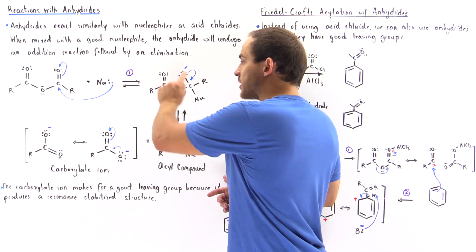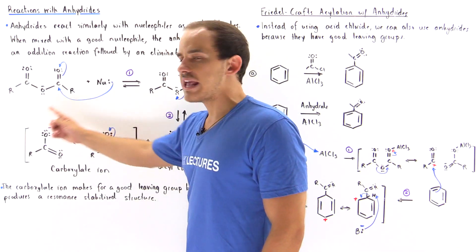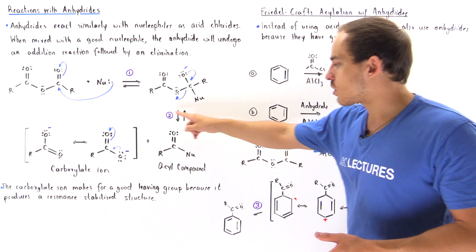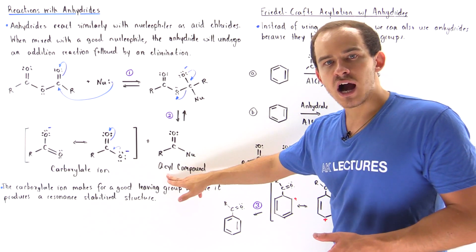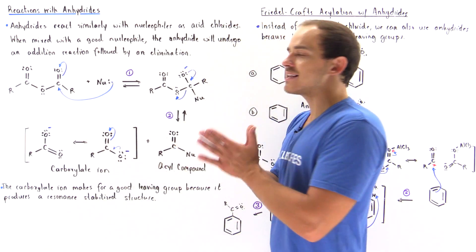So what makes this a good leaving group is the fact that we have resonance stabilization on our carboxylate ion. And of course we form the acyl compound. So this reaction is very similar to the reaction with our acid chloride,